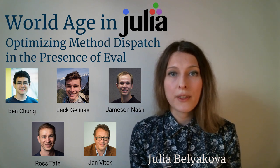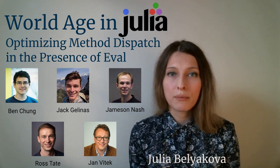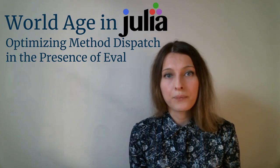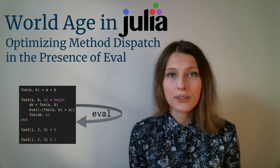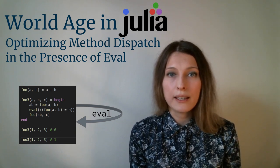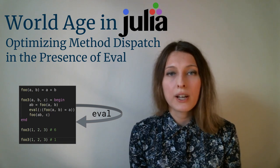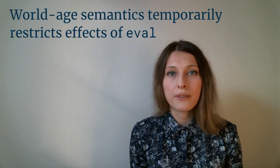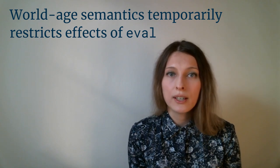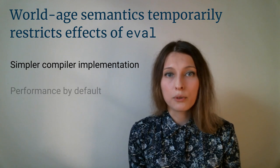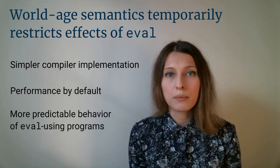WorldAge is a mechanism that the Julia language uses to simplify the interaction between eval and compiler optimizations. Like many other dynamic languages, Julia provides a way to dynamically modify running programs using eval. This poses a challenge to its JIT compiler. By temporarily restricting the effects of eval on function definitions, Julia is able to simplify the compiler implementation, achieve good performance, and provide predictable program behavior.